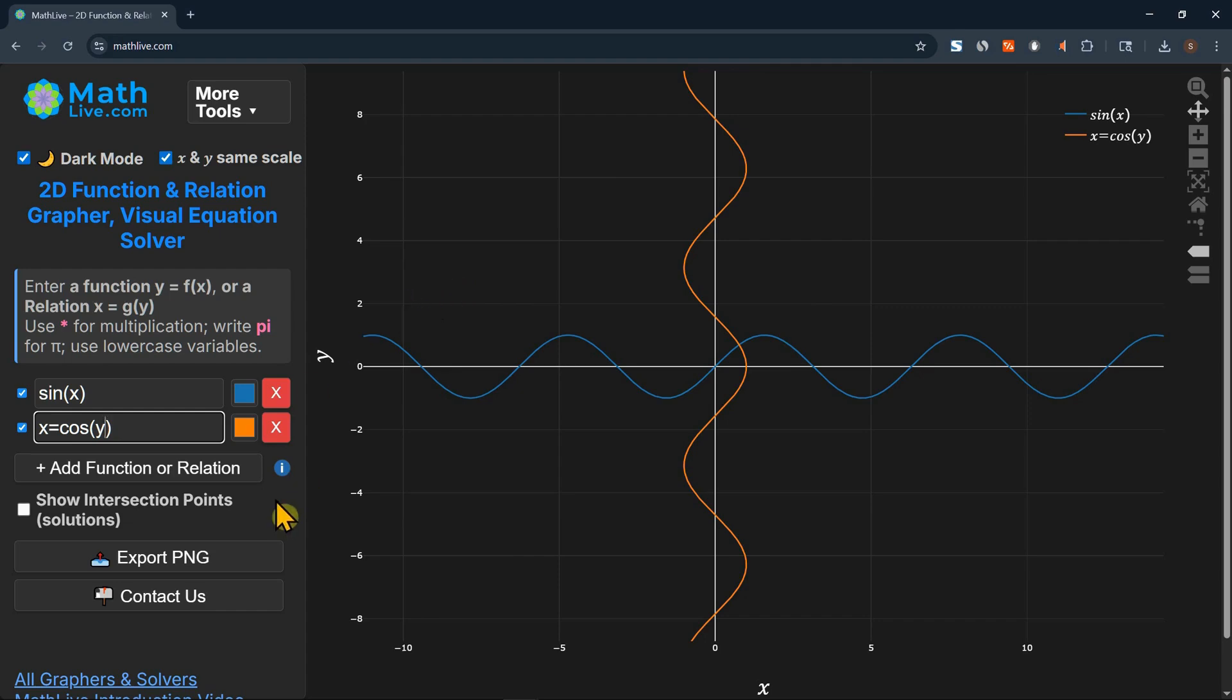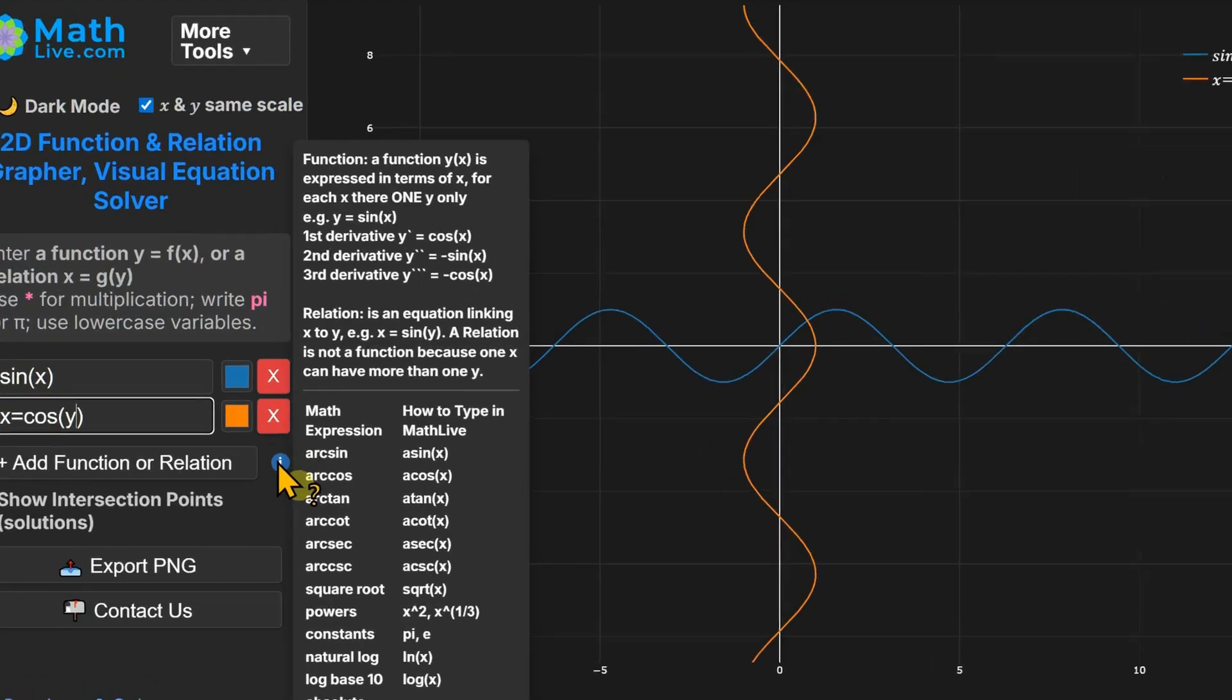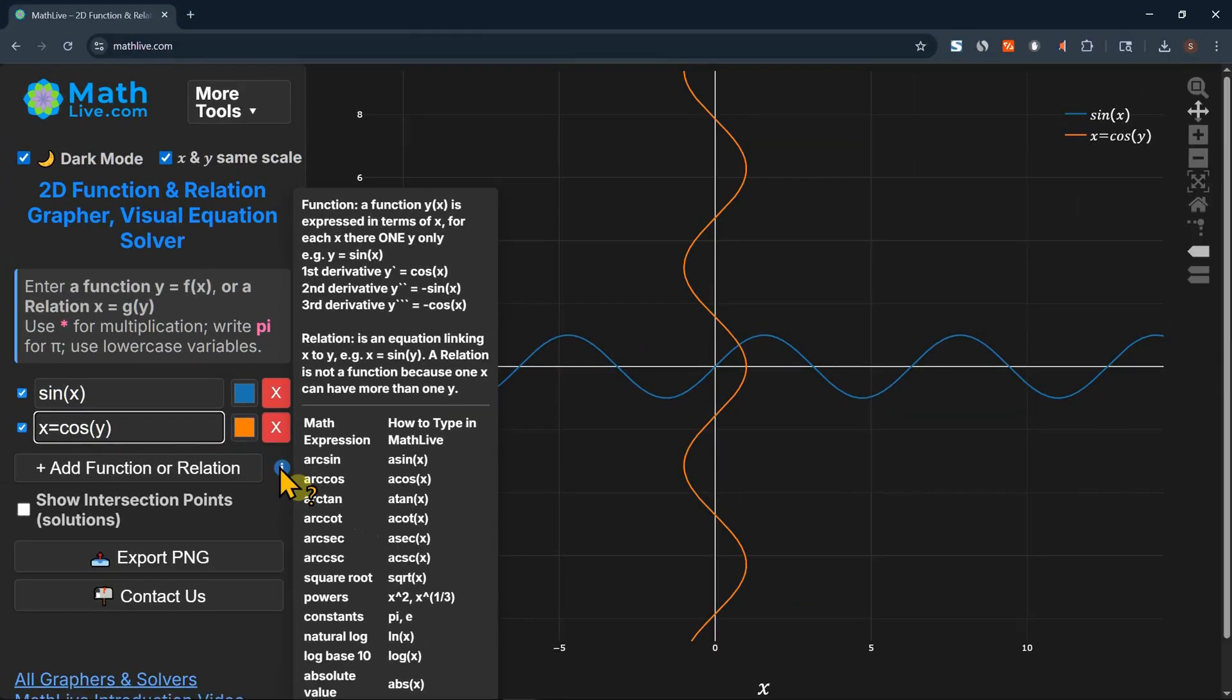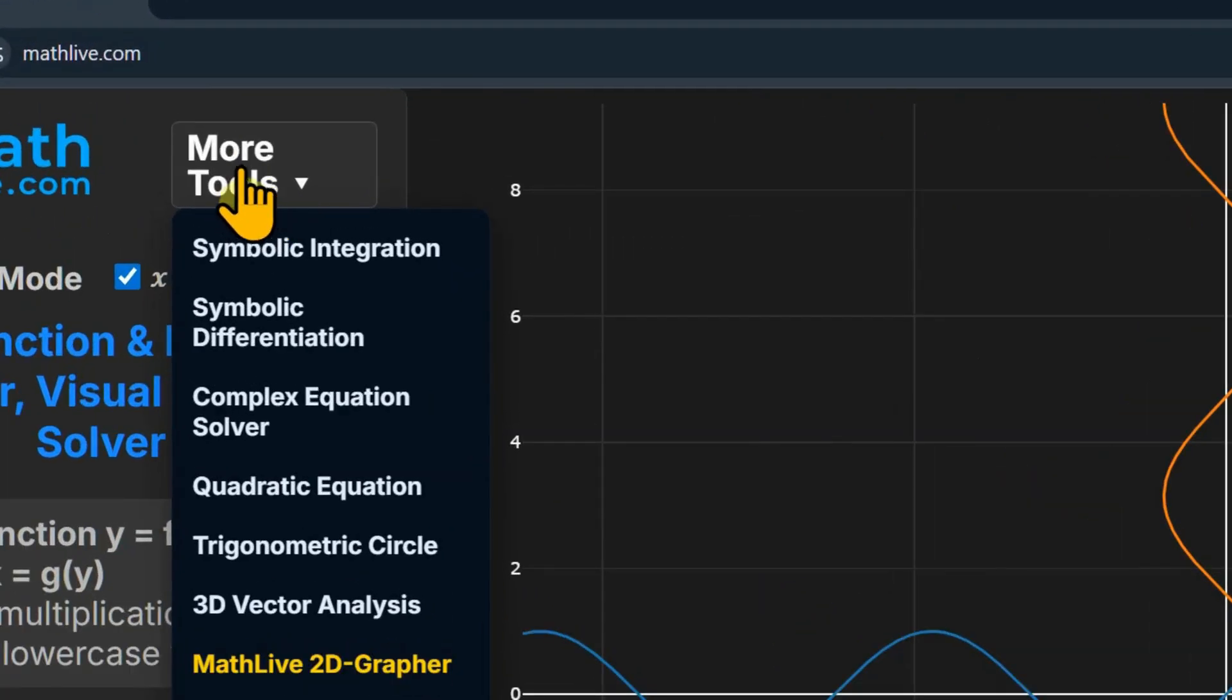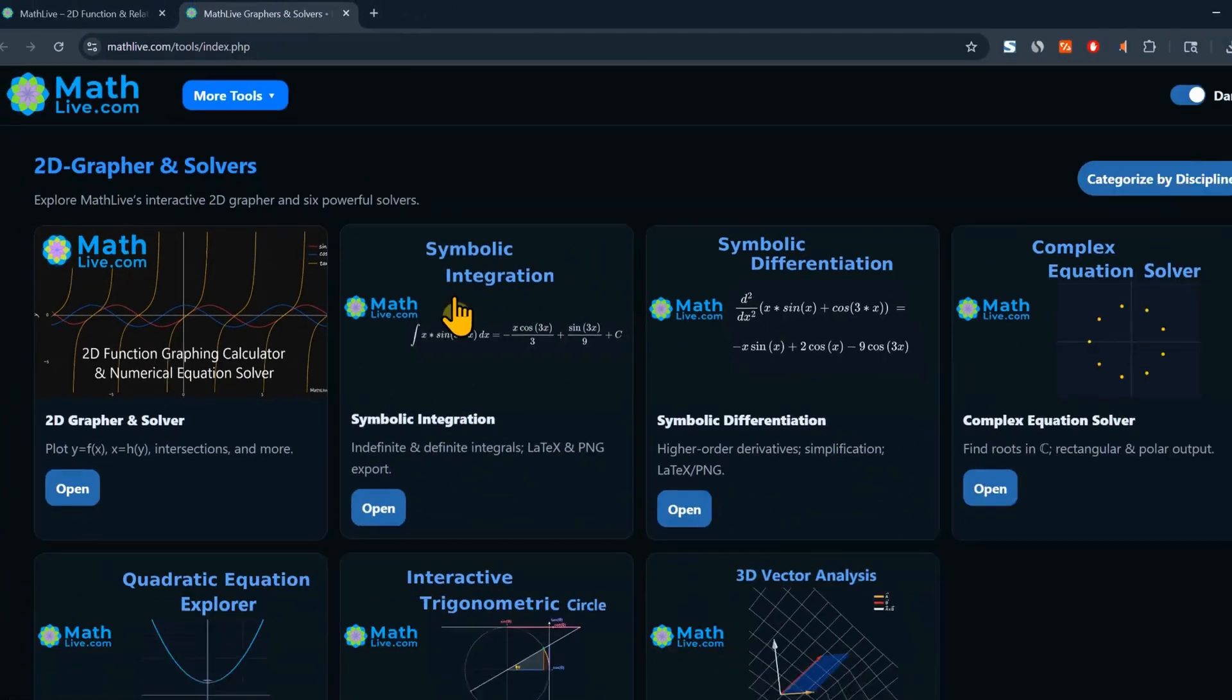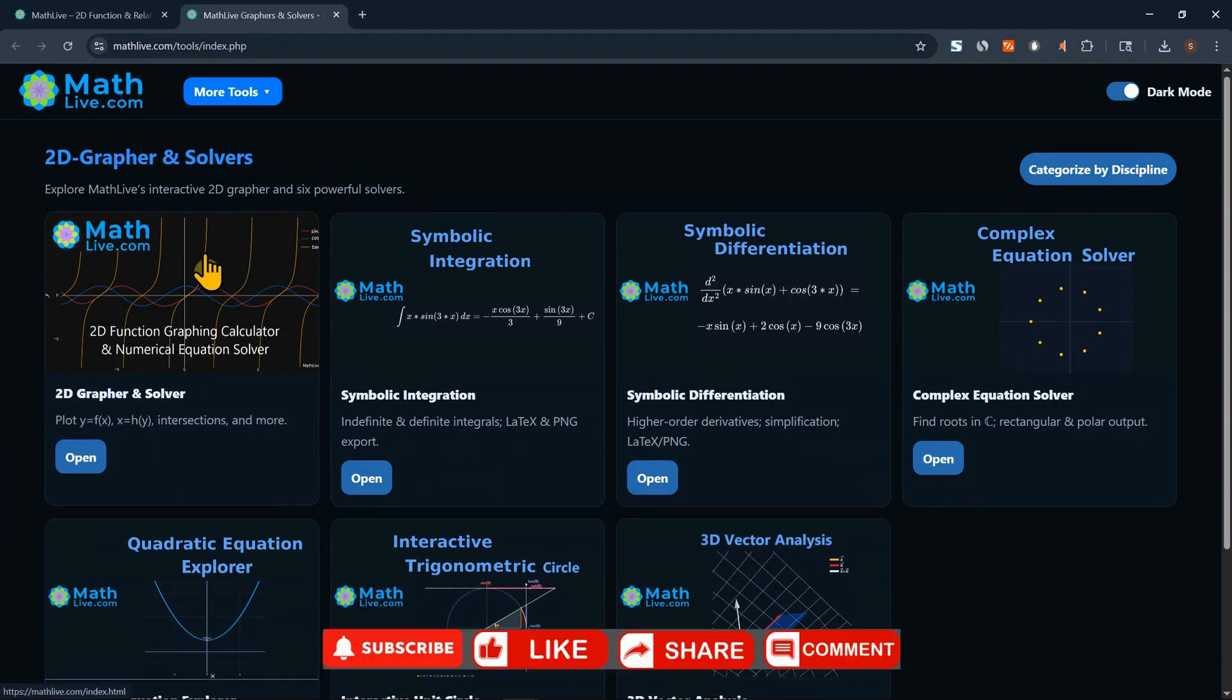If you click the blue information button, you will see a quick reference on how to type functions in MathLive.com. If you go to the top menu here, to more tools, you will see that we added basically six solvers, six new solvers. Symbolic integration, symbolic differentiation, complex equation solver, quadratic equation, trigonometric circle, and a 3D vector analysis. You will see all those solvers here. Those are the new solvers. And this is the grapher.